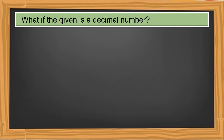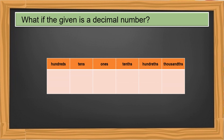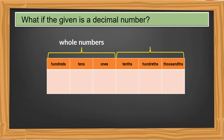What if the given is a decimal number? Let's use a place value chart. This part of the chart is for the whole numbers, and this part is for the decimal numbers, separated by a dot. On the whole number side, the place value starts with ones, while on the decimal side, it starts with tenths.